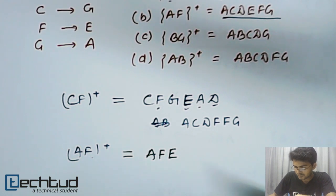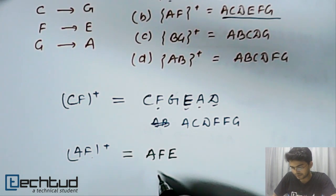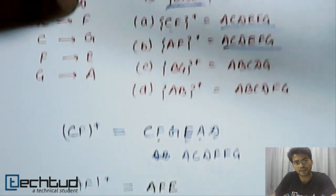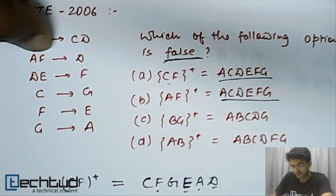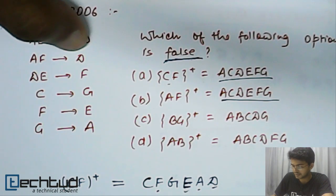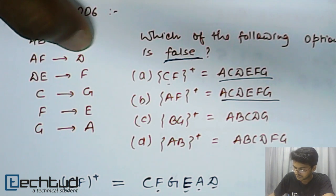Now, this, let's say this A and F. A and F can determine D here in this functional dependency. Using second functional dependency, we can see that A, F can determine D. So, D will also be there.